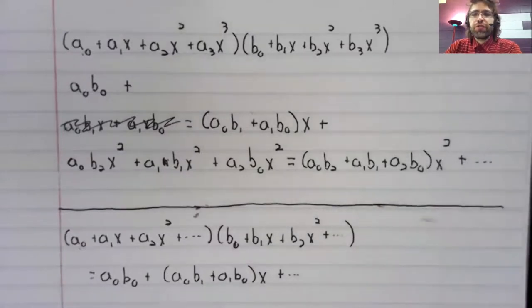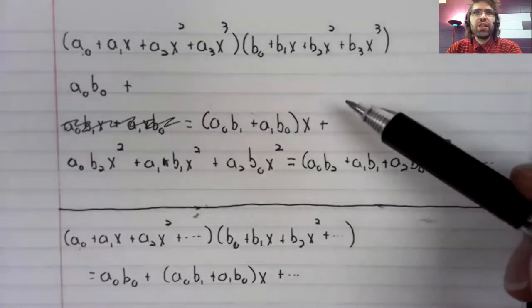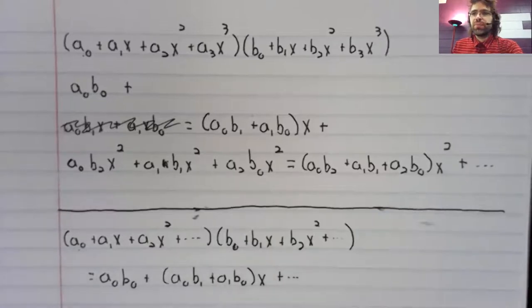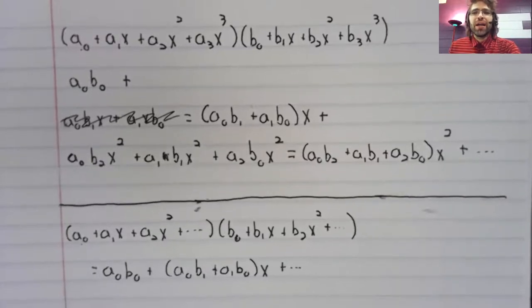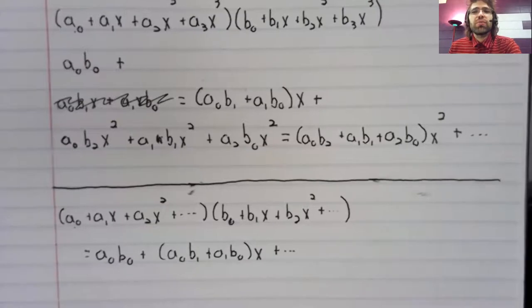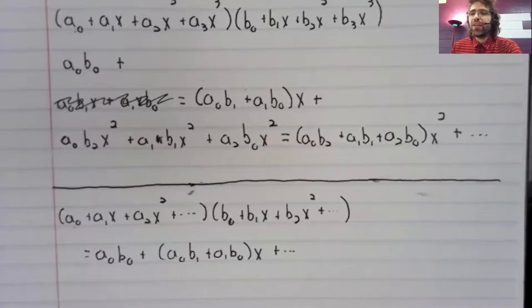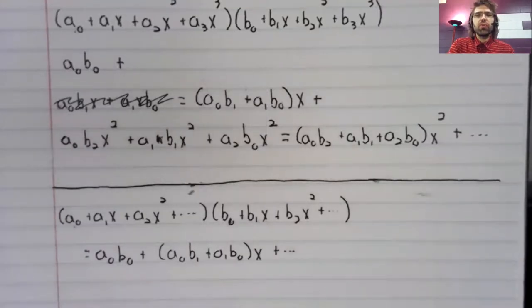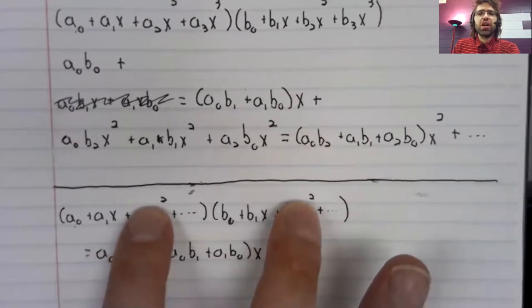The only difference is that when you have finite polynomials, this process terminates. With these power series, this process does not terminate. You'd have to keep doing this forever. But theoretically, you can do this multiplication. It's defined in the natural way, the same way we define multiplication for finite polynomials. And as with addition, we do need both these power series to converge.